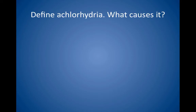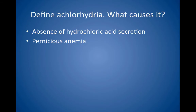Define achlorhydria. What causes it? Achlorhydria is an absence of hydrochloric acid secretion. It is caused most commonly by pernicious anemia, in which antiparietal cell antibodies destroy acid-secreting parietal cells and thus cause achlorhydria and vitamin B12 deficiency. It is often associated with other endocrine autoimmune disorders, such as hypothyroidism, vitiligo, diabetes, and hypoadrenalism. Achlorhydria also may be caused by surgical gastric resection.